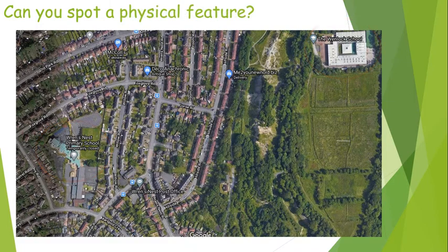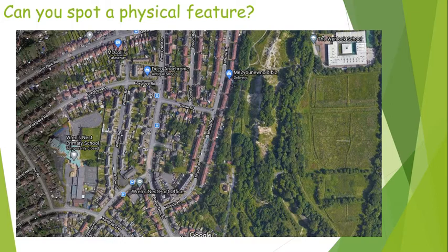Same aerial photograph again, but this time I need you to spot a physical feature. A physical feature is something that people had nothing to do with — it's natural. You can't choose a garden because at some point people would have put their gardens together, so even though it's grass or trees, we sort of made it. I want you to look at this photo and find an area with a physical feature that we didn't have anything to do with, that's natural, that was always there.